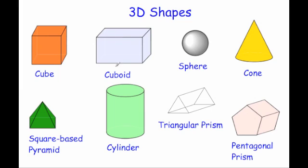The next shape is a cuboid. It again has six faces — some of them may be squares, but the rest are going to be rectangles. So normally it has six rectangular faces, but it may include some squares, just not all of them. Typical cuboids may be cereal boxes or wardrobes. It's got six faces, eight vertices and 12 edges as well. So that's a cuboid.